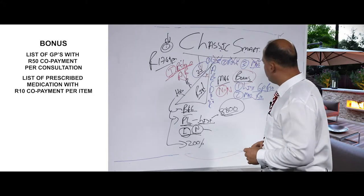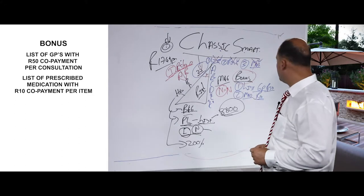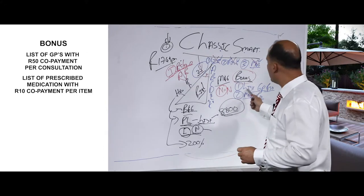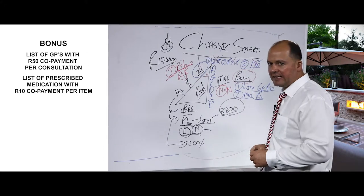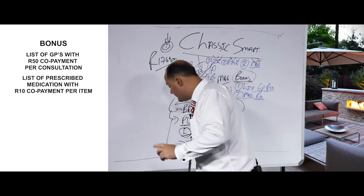So extra bonus benefits: a list of GPs, 50 rand per consultation, a list of medication prescribed by the specific GP, you'll have a 10 rand co-payment per item on the prescription.